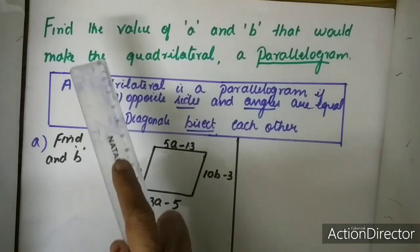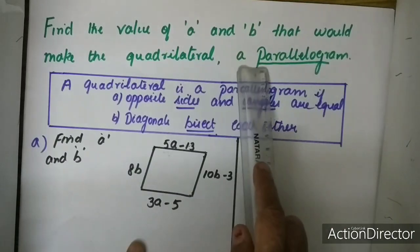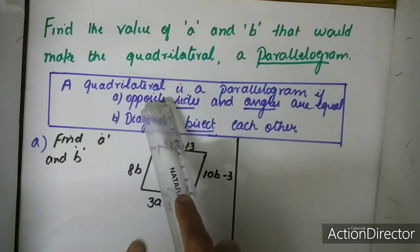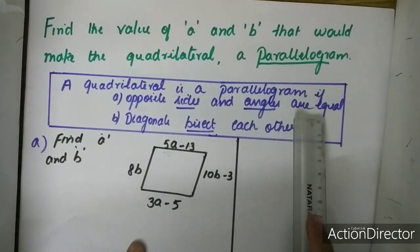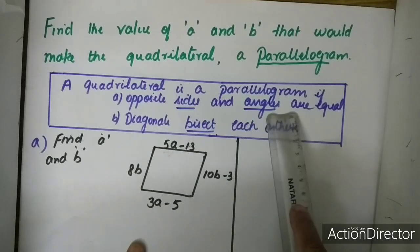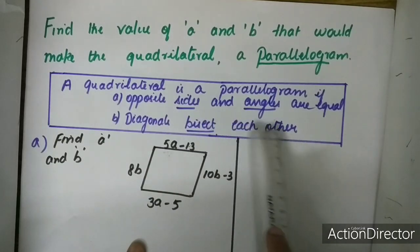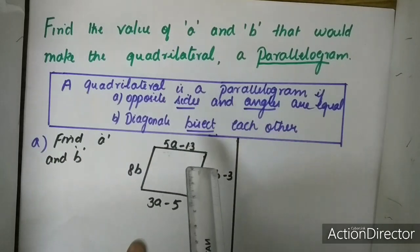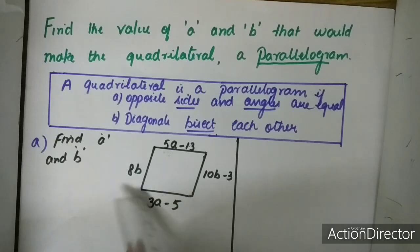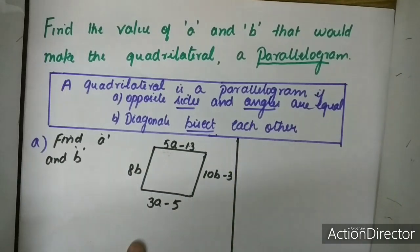Hello children, let us do this question now. Find the value of A and B that would make the quadrilateral a parallelogram. A quadrilateral is a parallelogram if: first condition, opposite sides and angles are equal — use this when the question is about sides and angles. Second condition, diagonals bisect each other. You can use any one condition to prove it. In this first question, only sides are given, so I am going to use the property that opposite sides are equal.